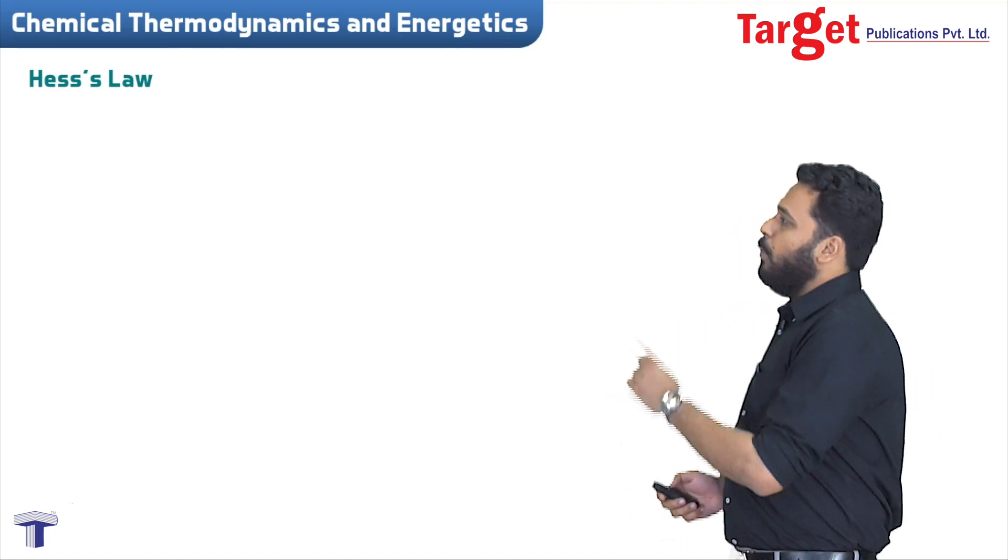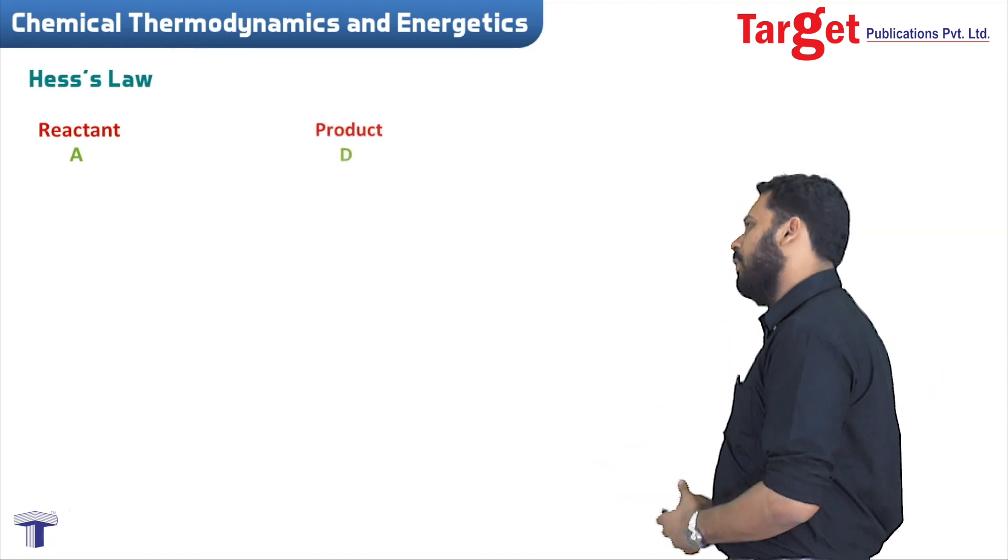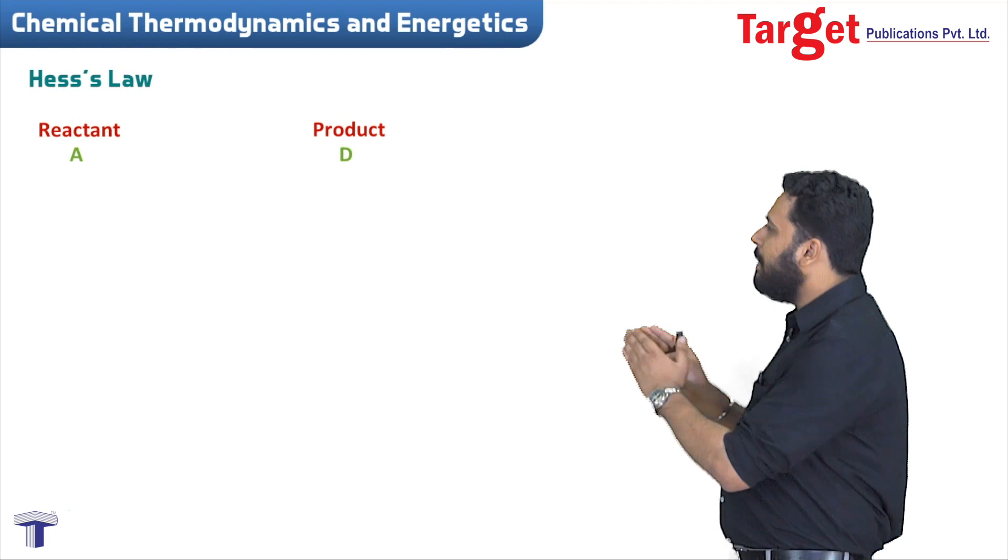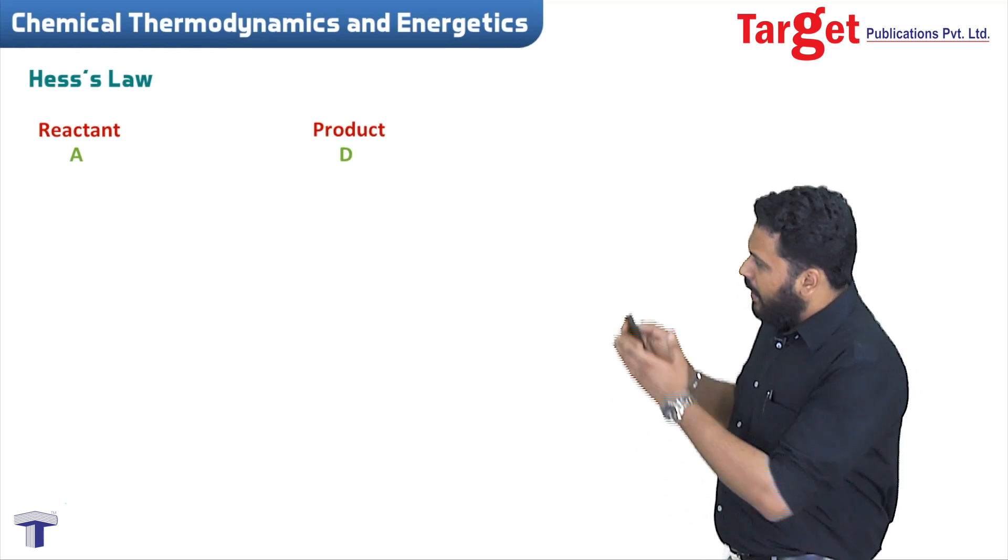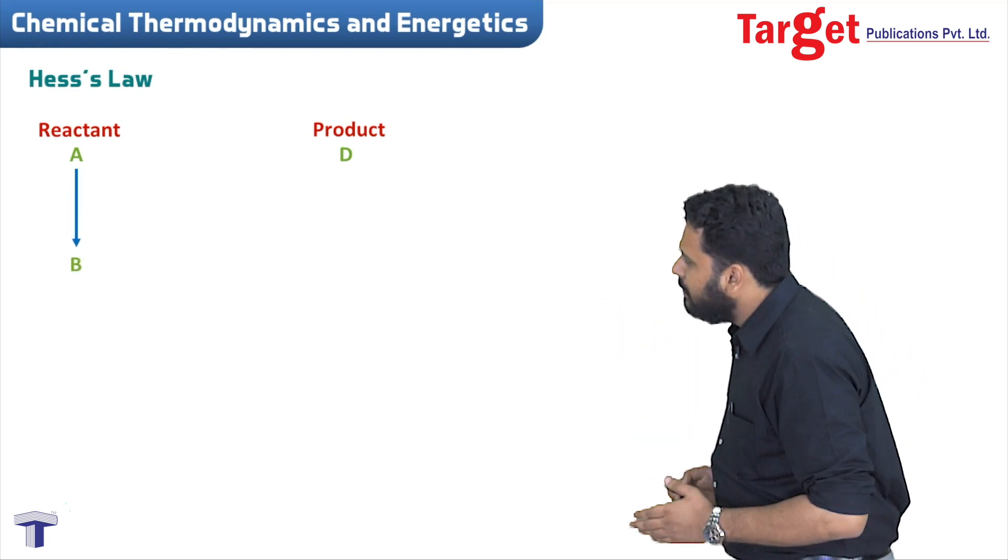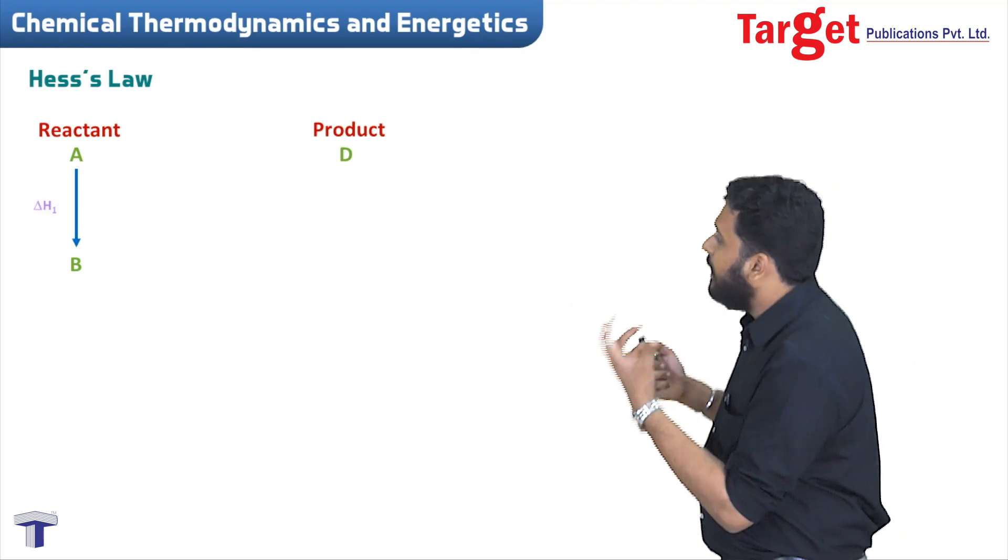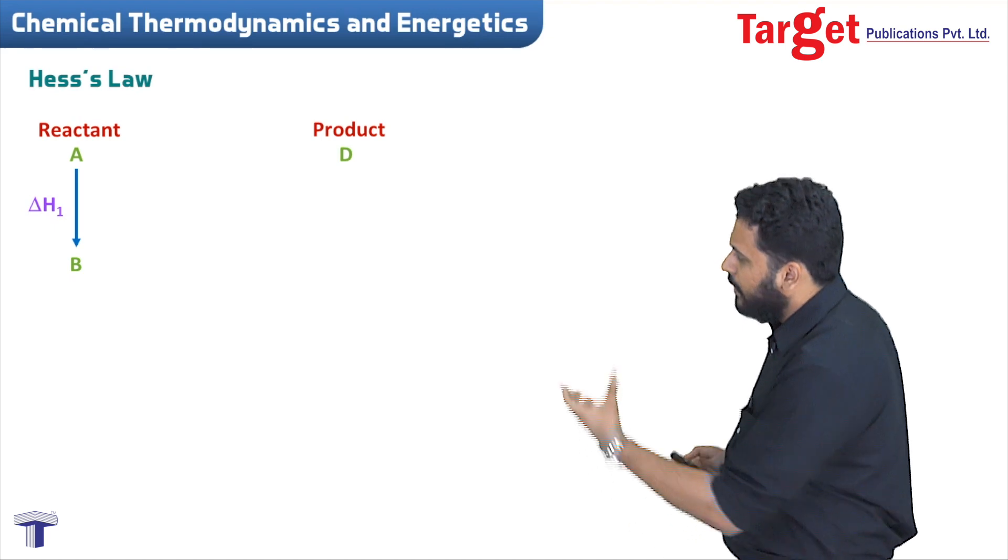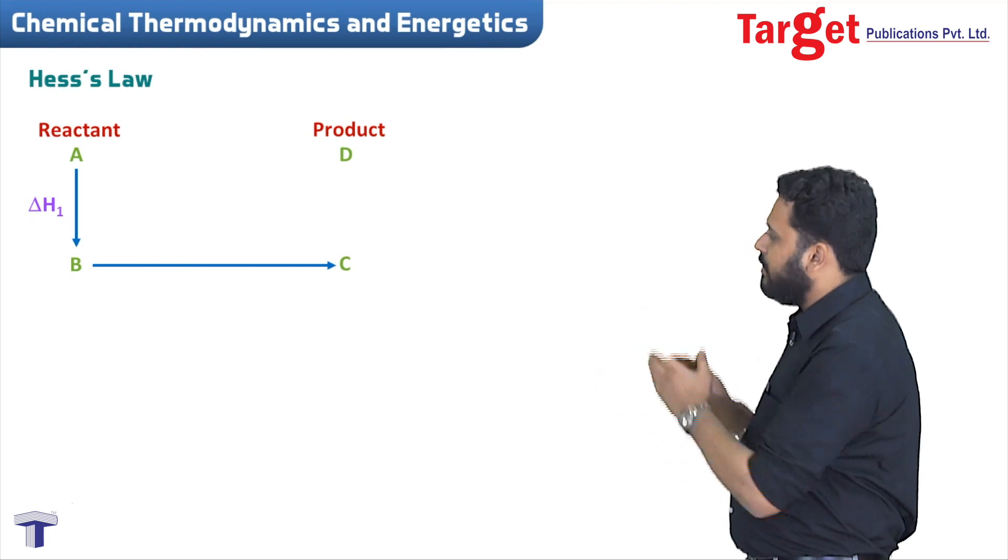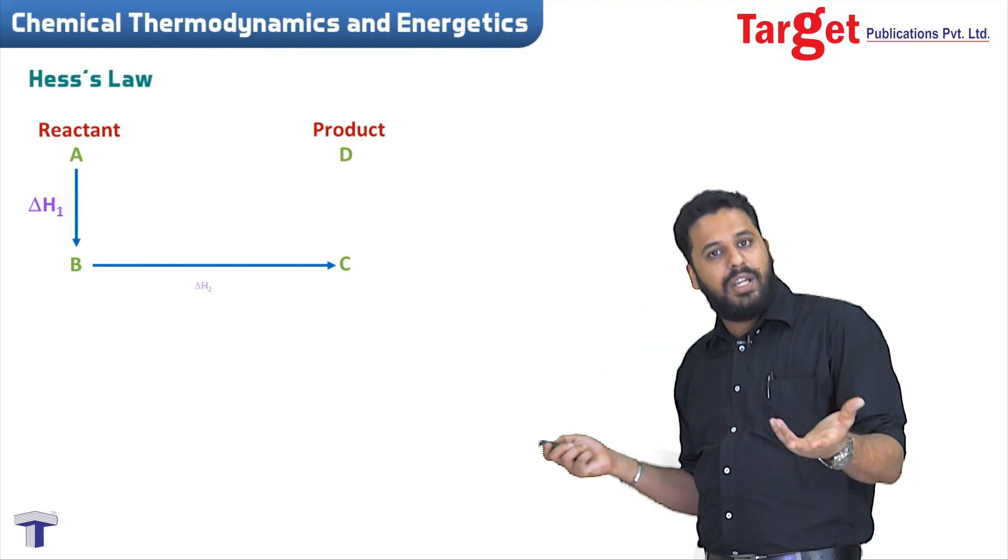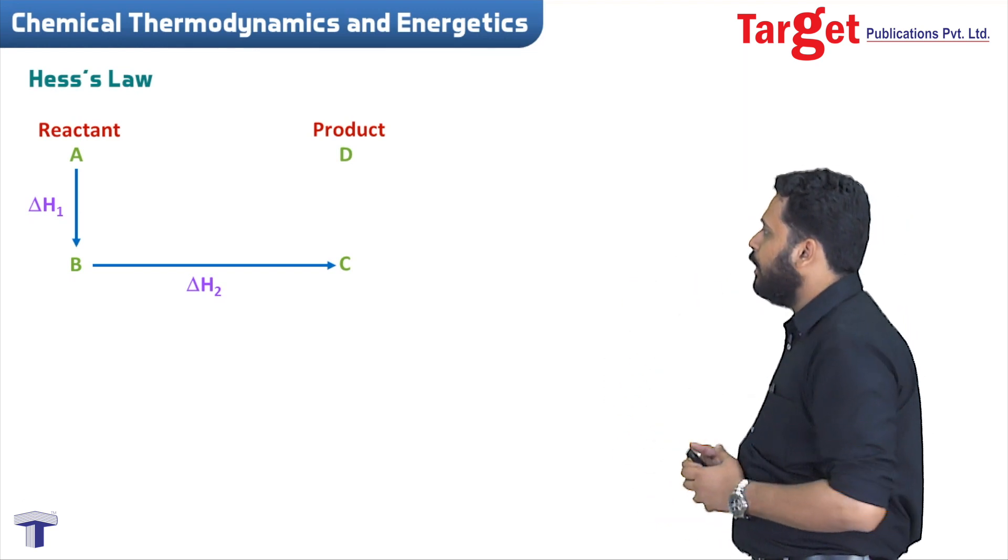Let's see what's Hess's law. We're going to consider a chemical reaction where reactant A is getting converted into product D. This reaction can happen in multiple ways. A getting converted to B has its own energetics, its own system, its own delta H. Let's call it delta H1.